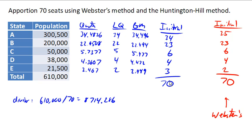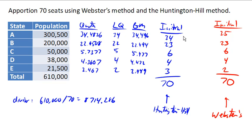This is the result of Huntington-Hill method. You'll notice that these two results are different. Under Huntington-Hill method, the smaller state E got the extra seat, whereas under Webster's method, state A ended up getting that extra seat.